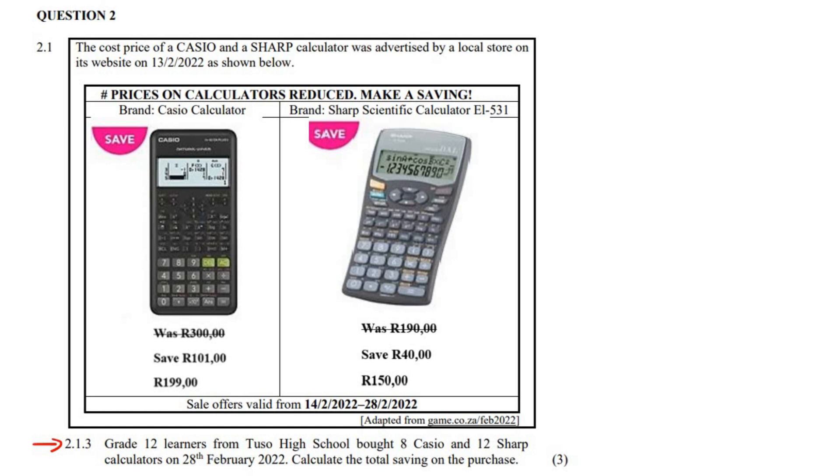This question says grade 12 learners from Tussauds High School bought 8 Casio and 12 Sharp calculators on 28 February 2022. Calculate the total saving on the purchase. The sales offer was valid from the 14th of February till the 28th, so they bought 8 Casios. So how much did they save?